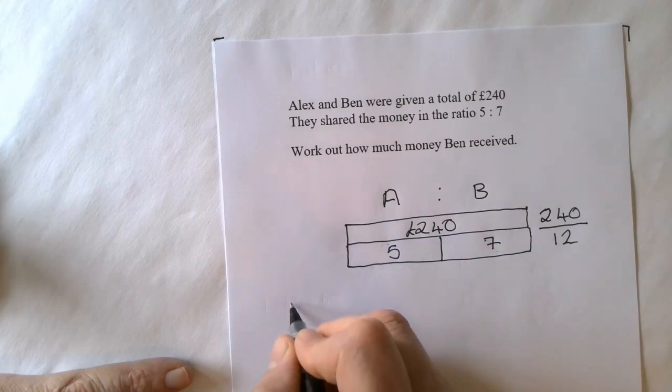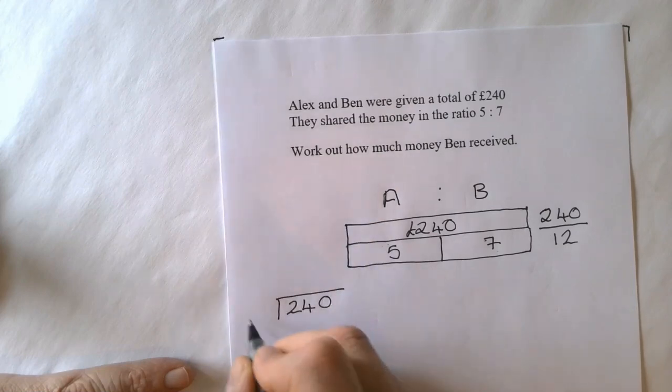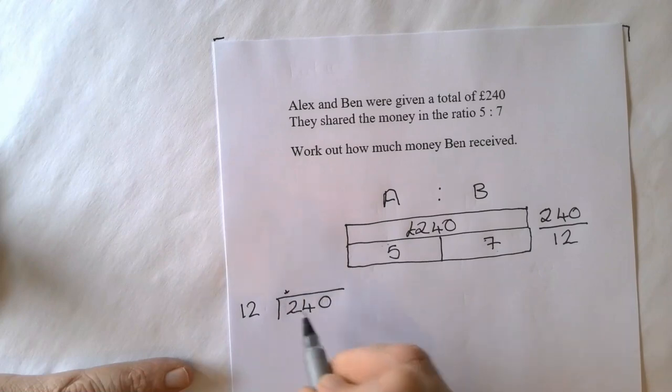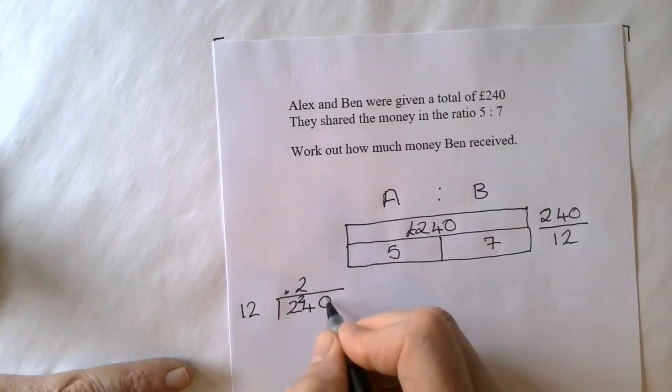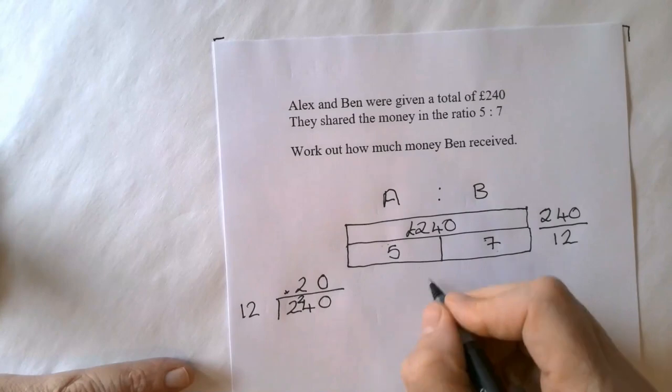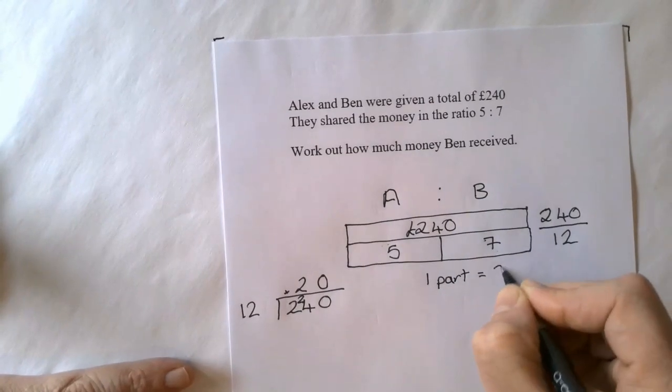So 240 divided by 12. 12 goes into 2? No, so put that across there and carry the 2 over. 12 goes into 24 twice. Bring the 0 up to here. So 1 part equals £20.